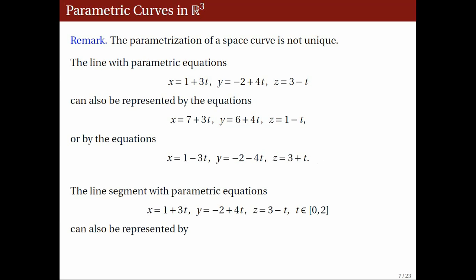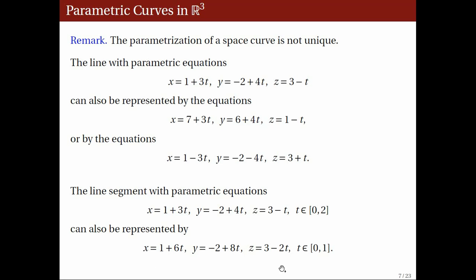We may also replace t by a multiple of t to change the rate at which the curve is traced. In example 2, if we replace t by 2t, then we obtain the parametric equations x equals 1 plus 6t, y equals negative 2 plus 8t, and z equals 3 minus 2t. In this case, the curve is traced twice as fast, so we expect a shorter t interval to trace out the line segment. The value of t in the second set of parametric equations that gives the endpoint 1, negative 2, 3 is t equals 0, while the value giving the endpoint 7, 6, 1 is t equals 1. Therefore, the second set of parametric equations yields the line segment as t varies from 0 to 1.